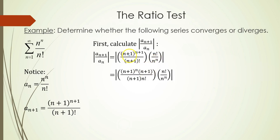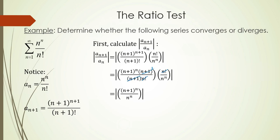I took n plus 1 to the n plus 1 power and broke it up into n plus 1 to the n, times n plus 1 to the first — using properties of exponents in reverse. Similarly, I write n plus 1 factorial as n plus 1 times n factorial, writing the first factor separately. Then with n factorial over n to the n, the n factorials cancel out, and the n plus 1 on top cancels with the n plus 1 on the bottom, leaving the absolute value of n plus 1 to the n power over n to the n.